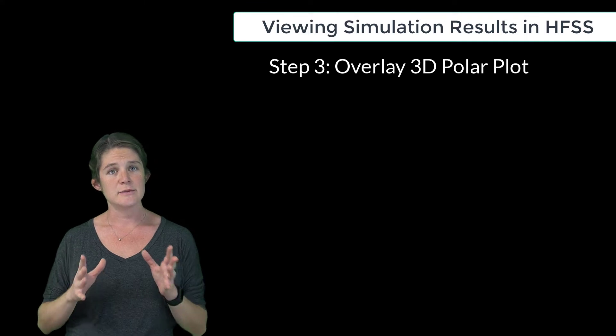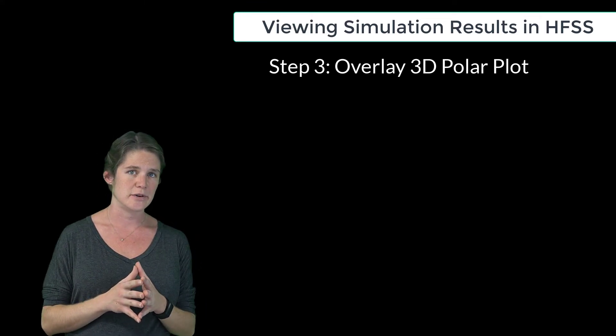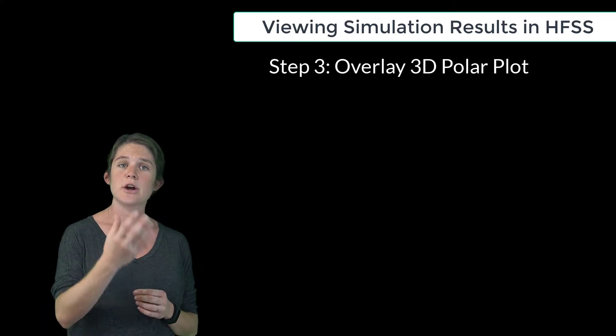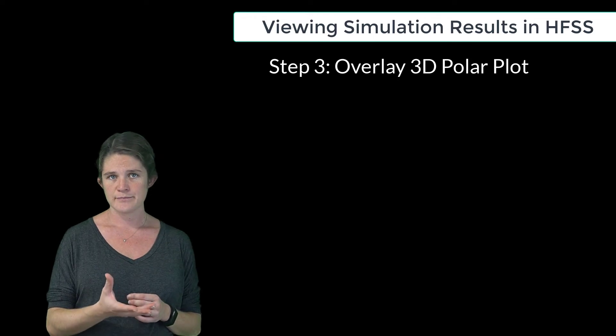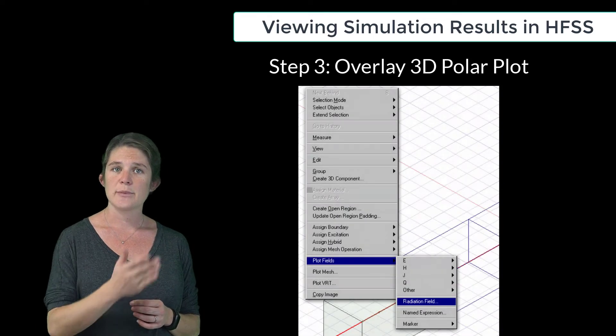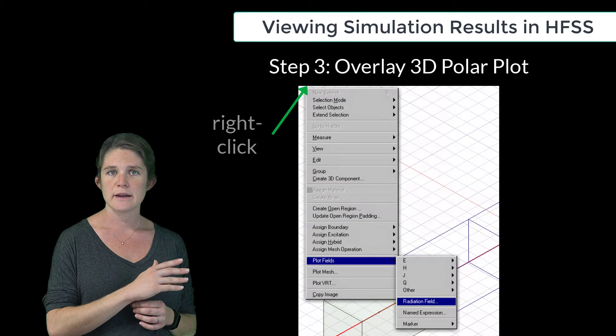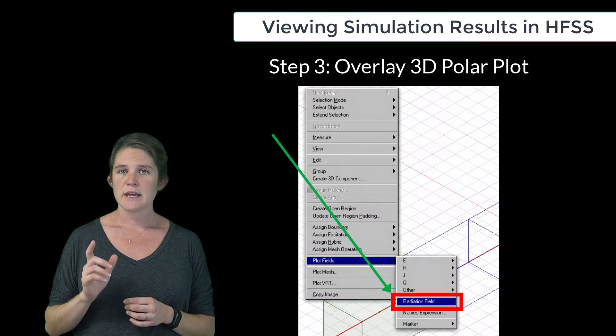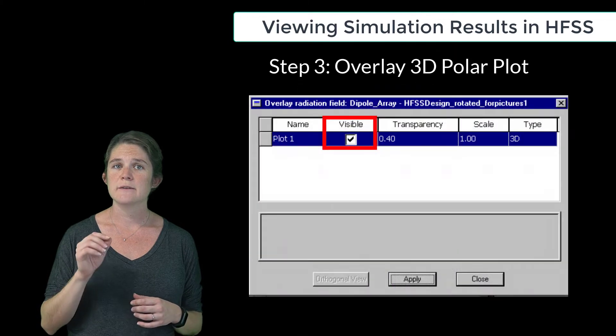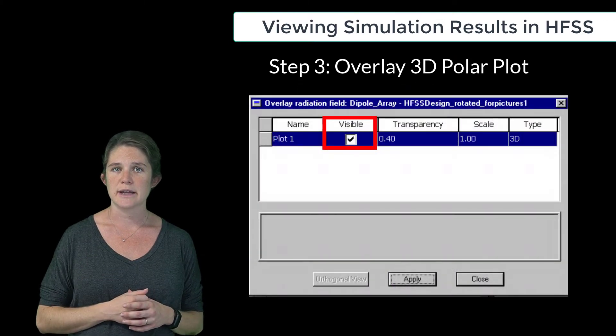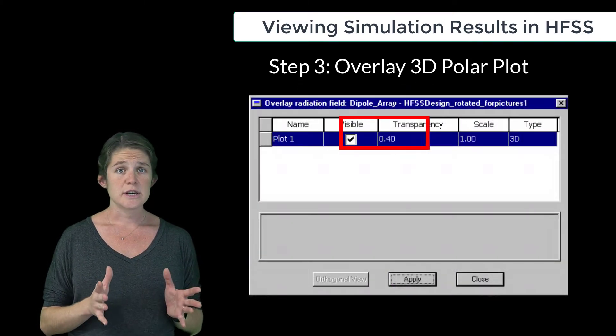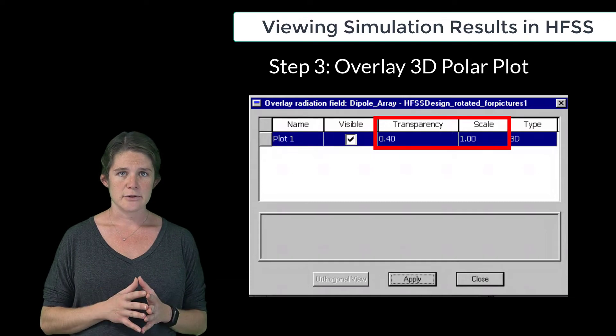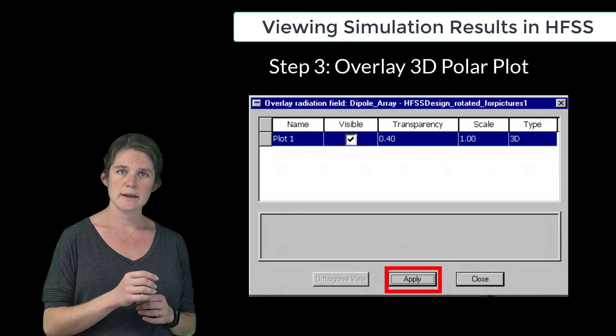It can often be helpful in terms of understanding the orientation of a radiation plot to visually overlay it on the original model. If you want to do this, go back to the model, right-click, and choose Plot Fields Radiation Field. In the pop-up window that results, check the Visible box next to the plot you'd like to overlay. You may also adjust its scale and transparency if you'd like. Click Apply, and then Close.